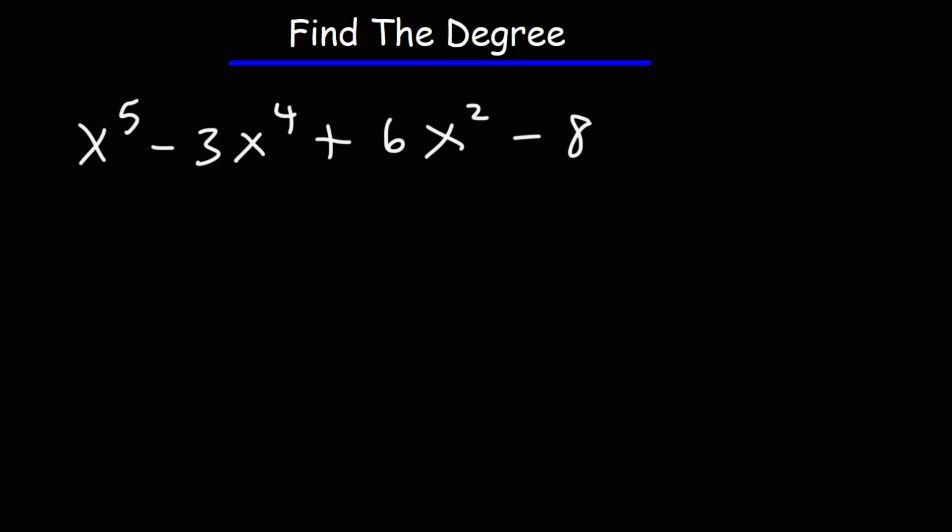In this lesson, we're going to talk about how to find the degree of a polynomial. So we have an example problem here: x to the fifth power minus 3x to the fourth power plus 6x squared minus 8. What is the degree of this particular polynomial?